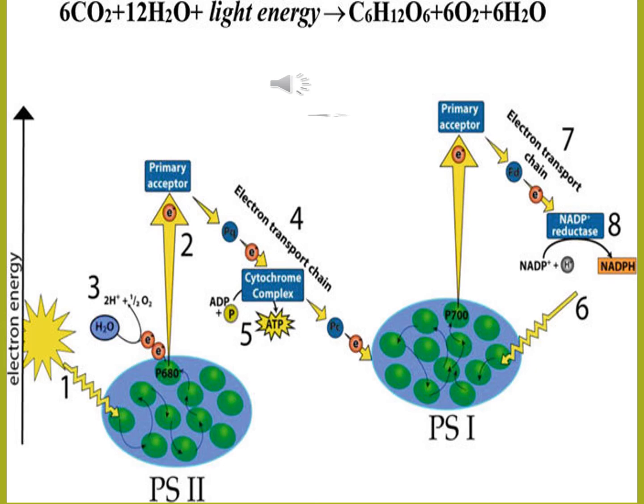Again, light strikes on the chlorophyll molecule at point 6, electrons get excited and move toward the electron transport chain. These electrons combine with NADP to produce NADPH. So on points 5 and 8, ATP and NADPH are the two products of light reaction. The whole series of light reaction is also called the Z scheme, due to its Z-shaped flow chart.